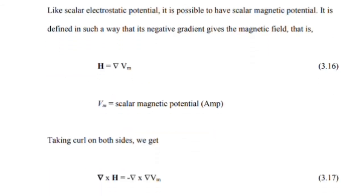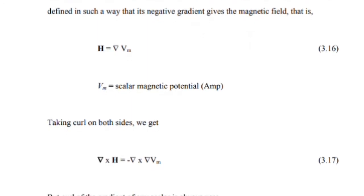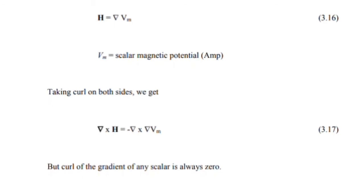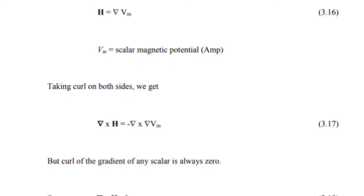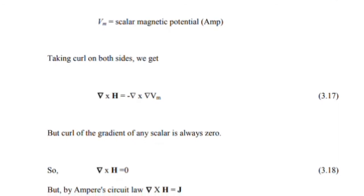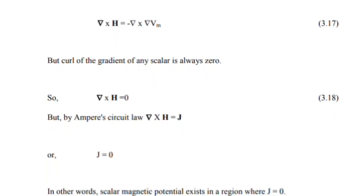Taking curl on both sides, we get del cross H equal to minus del cross del Vm. The curl of the gradient of any scalar is always zero. Hence del cross H equals zero. But by Ampere's circuit law, del cross H equals J. Therefore J equals zero. In other words, scalar magnetic potential exists only in the region where J equals zero.